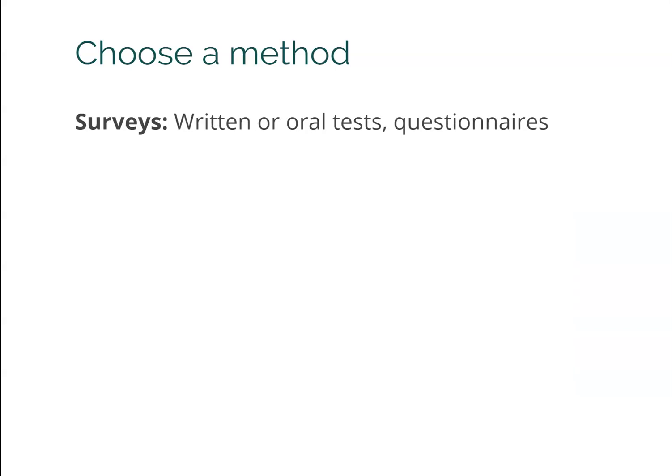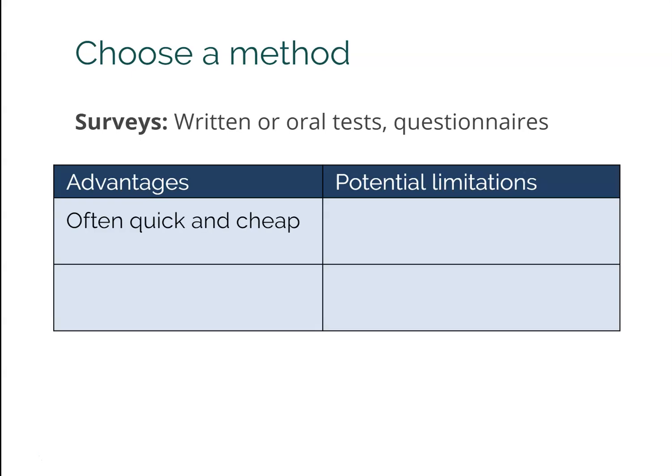Next we have the survey method, which is by far the most common method used in psychology research. By survey, this can be anything — a web survey, an online survey, a questionnaire, a test — anything where you're just asking people for information. The reason it's used so much is it's really quick and cheap; you can post a survey online and get tons of data. If you need to do in-person interviews, that will take more time and cost more money, but it is often fast and cheap.